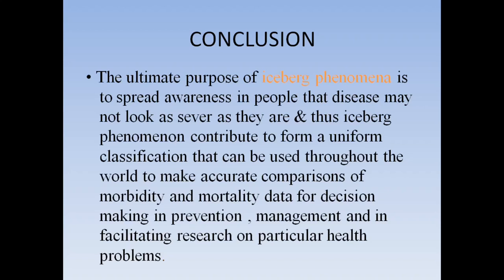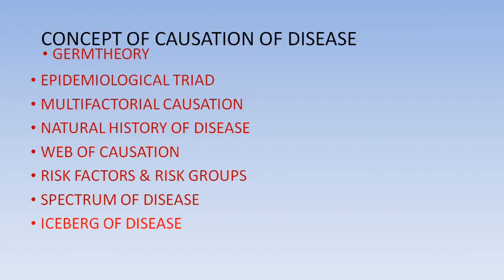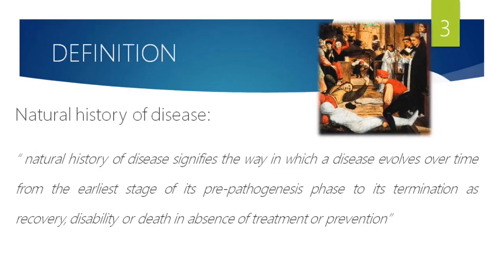In summary, concepts of causation covered so far include germ theory, epidemiological triad, multifactorial causation, web of causation, and iceberg of disease. The remaining topics — natural history of disease, risk factors, and spectrum of disease — will now be covered.